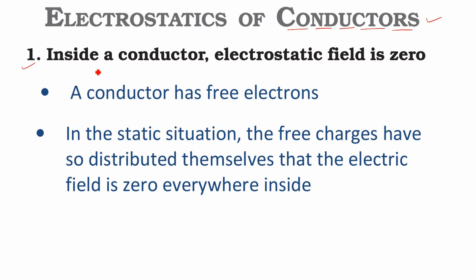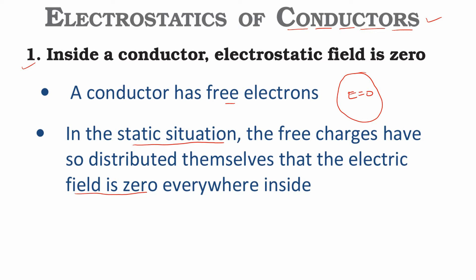First thing which you have to remember: inside a conductor, electrostatic field is zero. Whatever conductor you have, inside that conductor the electric field will be zero. A conductor has free electrons — you already know this. In the static situation, the free charges have so distributed themselves that the electric field is zero, so that the net field is zero everywhere inside the conductor. So the first property to remember: inside the conductor electric field will be zero.